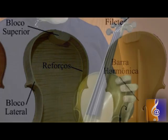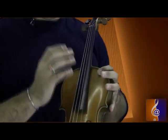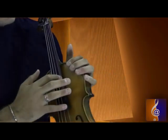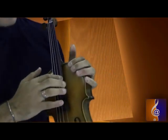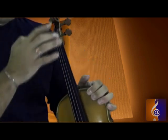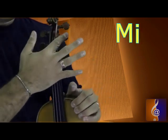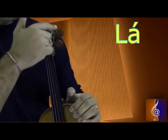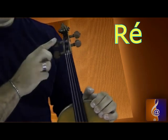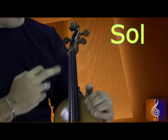O violino é composto por quatro cordas: Mi, La, Ré, Sol — sempre contadas da mais fina para a mais grossa, e sempre também vão estar nessa posição de cravelhas. Mi, La, Ré e Sol, sempre.